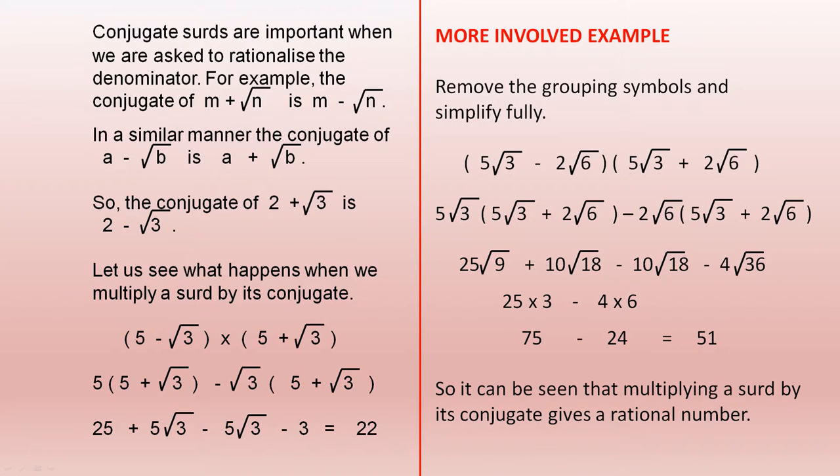Let us see what happens when we multiply a surd by its conjugate. So let's multiply 5 minus the square root of 3 by 5 plus the square root of 3. So that gives us this line here. When we remove the grouping symbols we have that line there. Now those two terms cancel each other out. 25 minus 3 is 22. So you can see when we multiply a surd by its conjugate we get a rational number.